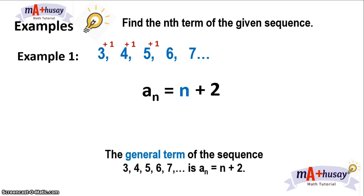So in this case, the general term of the sequence 3, 4, 5, 6, 7, and so on, is a sub n equals n plus 2. Meaning, the sequence 3, 4, 5, 6, 7 is defined by the function a sub n equals n plus 2.